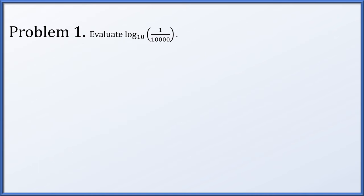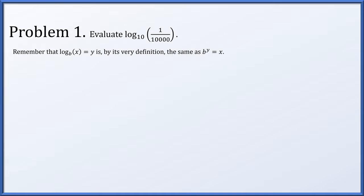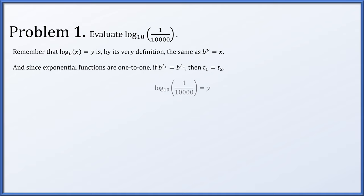In problem one, we're asked to evaluate the log base 10, otherwise known as the common logarithm, of 1 over 10,000. Remember that a logarithmic equation like log base b of x equals y is by definition a way of rewriting an exponential expression b to the y equals x. Exponential functions are one-to-one, meaning if you have the same base raised to two powers and the result is equal, those powers were actually equal to begin with. So we set log base 10 of 1 over 10,000 equal to y, convert it to 10 to the y equals 1 over 10,000. Since 1 over 10,000 is 10 to the minus 4, y equals negative 4.